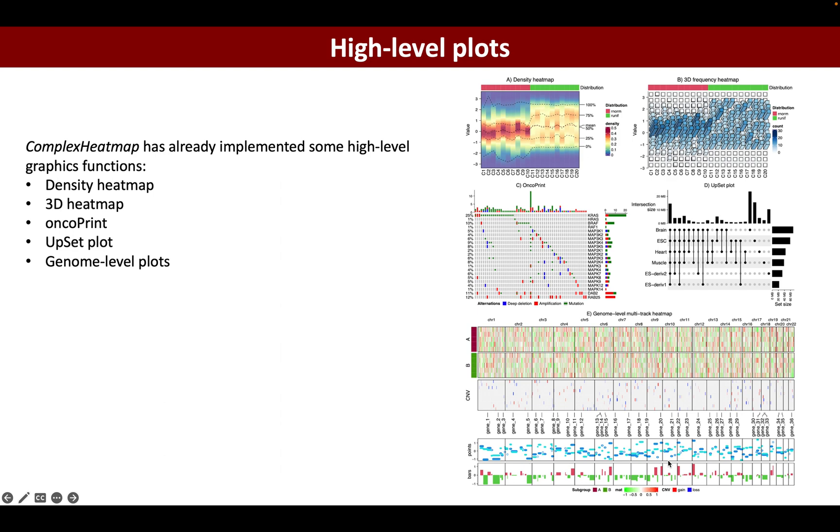Figure A is the density heatmap which uses colors to map to the density of a list of distributions. Figure B is a 3D frequency heatmap which uses the same matrix as figure A. Figure C is the oncoprint which visualizes genomic mutations or genomic alterations in a list of genes in a cohort of patients to see the mutation patterns.